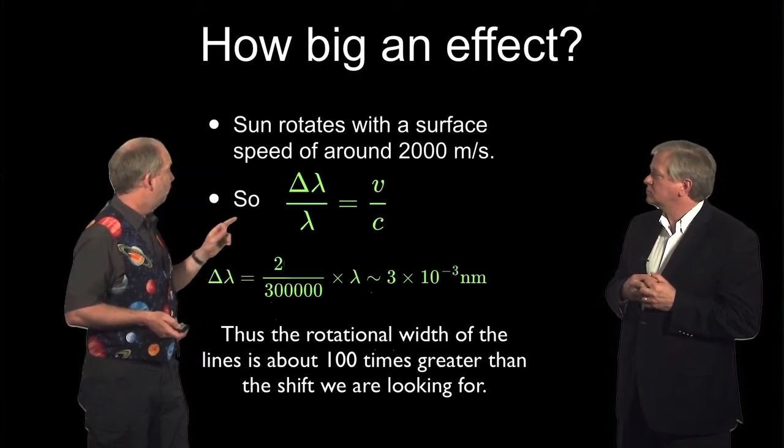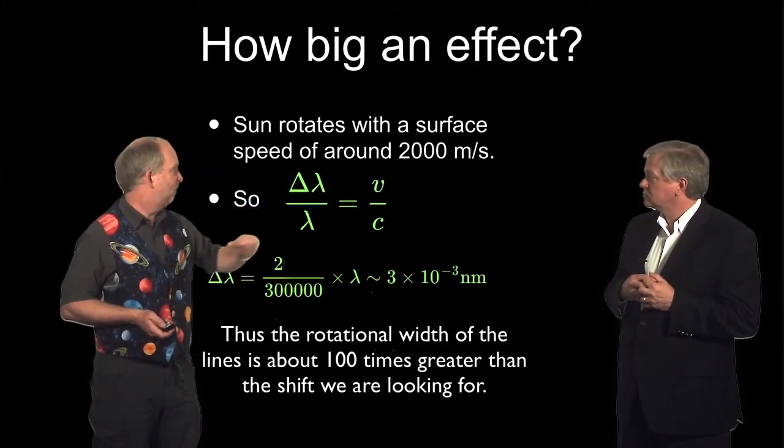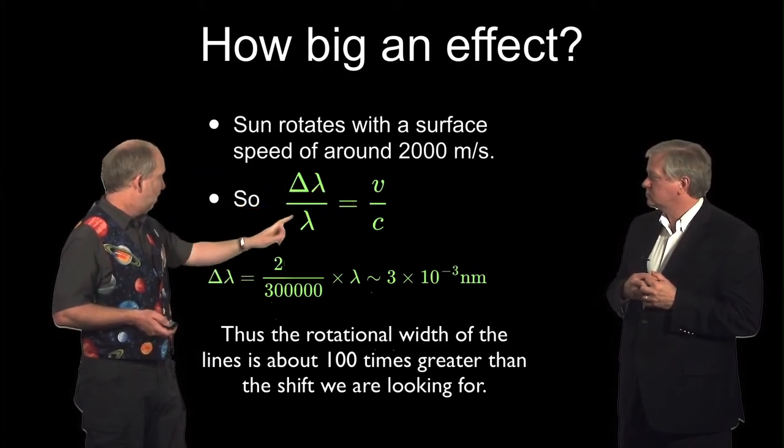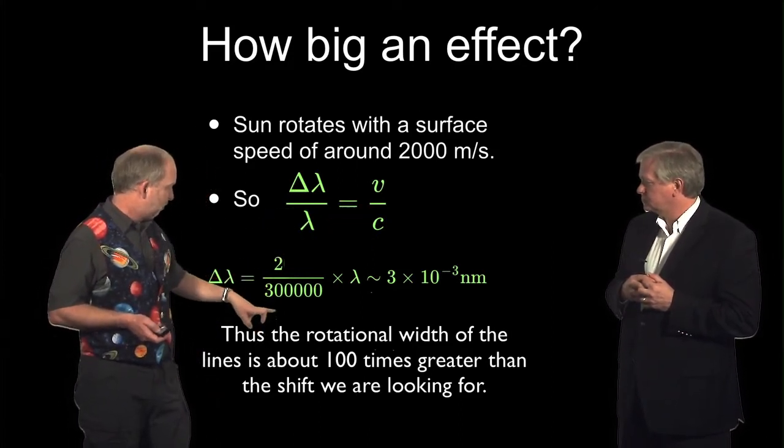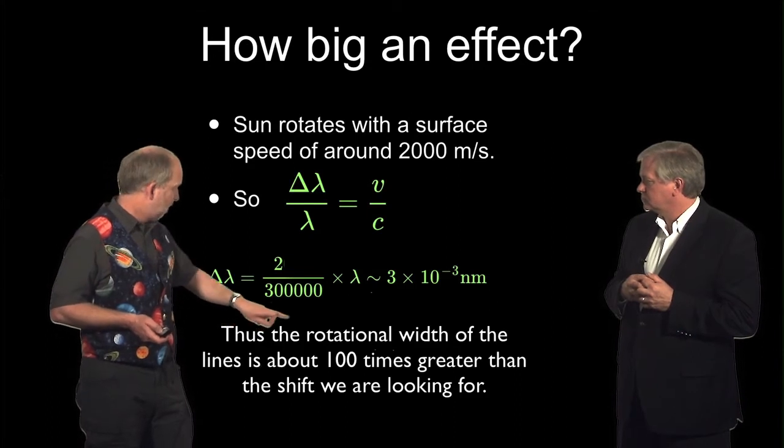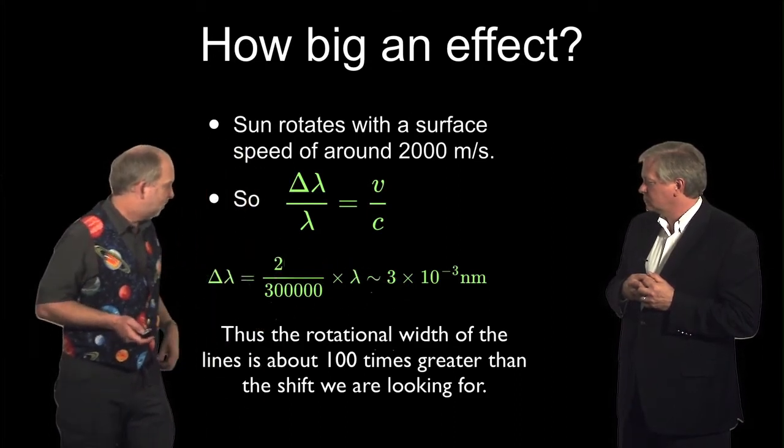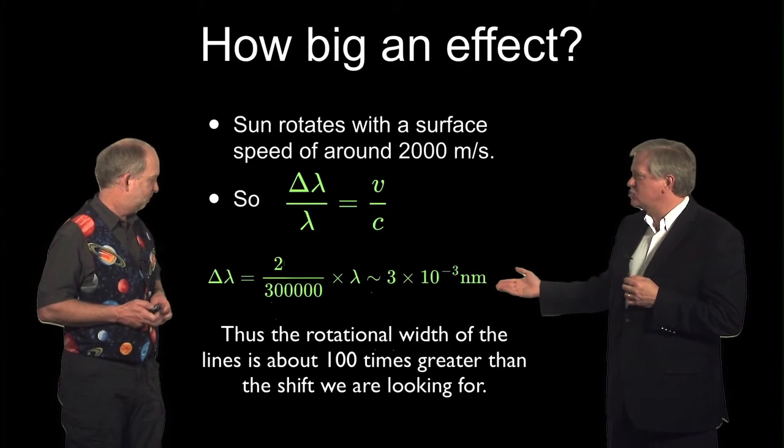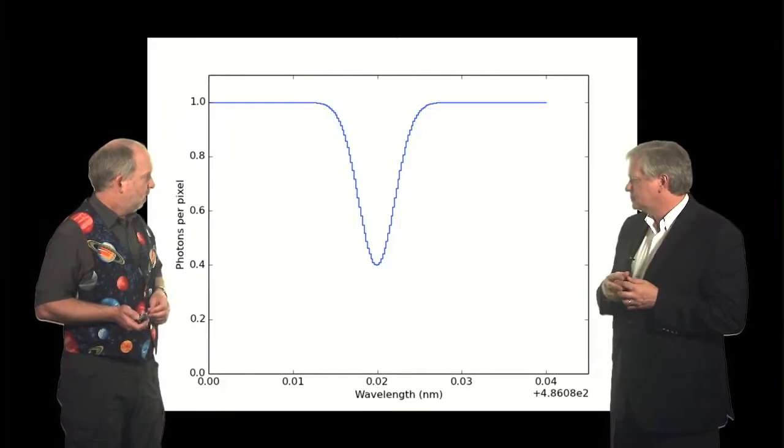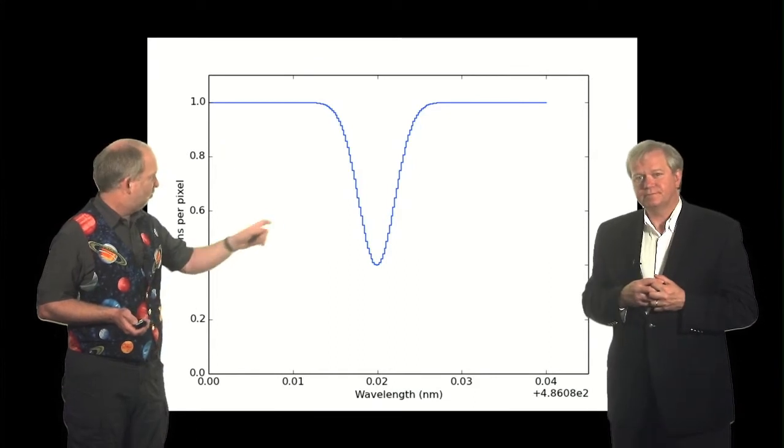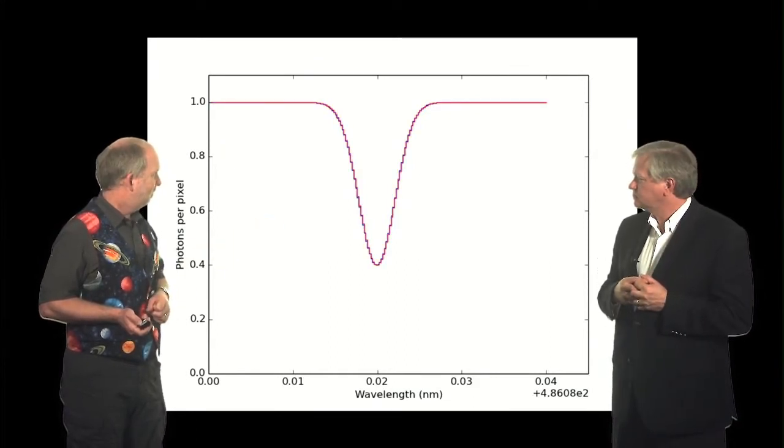Having calculated how broad, typical surface speed of the Sun is about 2,000 meters per second. The change in wavelength over the wavelength is the velocity divided by the speed of light. So 2,000 over 300,000 comes out as about this. So that's almost a factor of 100 larger than the effect we need to measure. So once again we're in a situation of going from something like this to something like that.